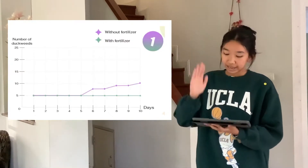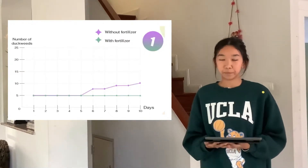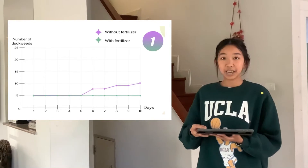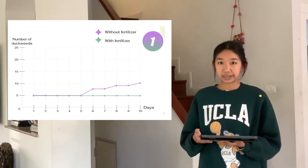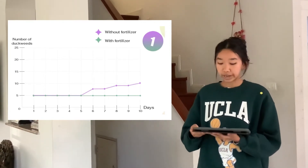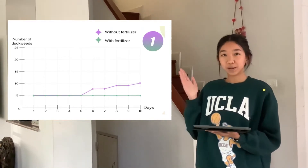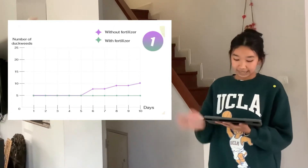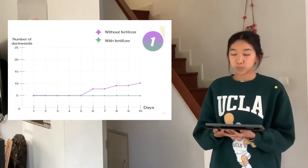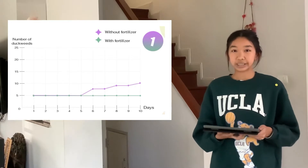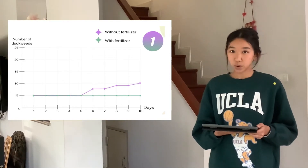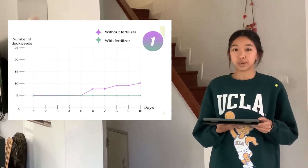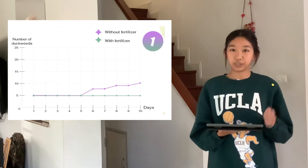After completing our experiment, we put the information into a graph. This is the graph for trial 1. We use different colors to represent different containers. From the graph, we can see that in the first 5 days, both of them grew the same — they didn't grow, so the amount of duckweed stayed the same as the first day.